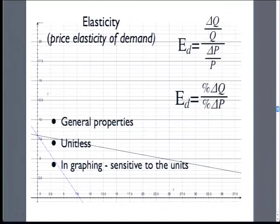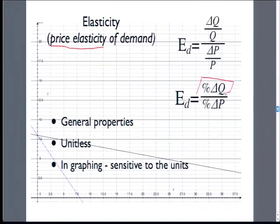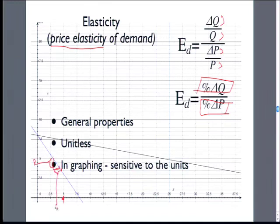This brings us to the question of elasticity. The basic one we're thinking about here in our demand curves is the price elasticity of demand. The price elasticity of demand is the percent that quantity changes with the percent change in price. Mathematically, it's the change in quantity divided by the quantity where we are, divided by the change in price over price. So it's (ΔQ/Q) divided by (ΔP/P). What's important about elasticity is there are no units on it — it's a percent divided by a percent, so any way I draw a graph, elasticity doesn't have a scale.